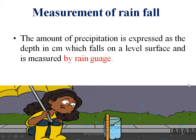The measurement of rainfall is done using a rain gauge. The amount of precipitation is expressed as the depth in centimeters which falls on a level surface and is measured by rain gauge. The measure is in centimeters and the depth is the recorded measure.